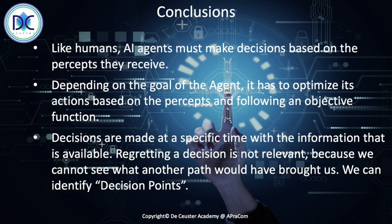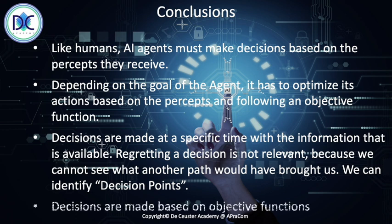Regretting decisions is basically not relevant, certainly not with an AI system. We've made a decision, we look at the results and see what is going on and how we can improve. But once a decision has been made, the path has been selected. We can find those decision points, but it's important to learn from what we can do better next time. Basically, all decisions are based on an objective function, and objective functions provide us with information about the effectiveness of the solution that we have selected.